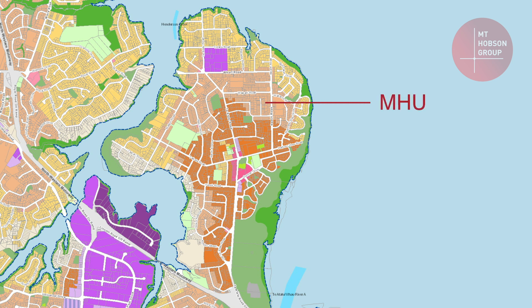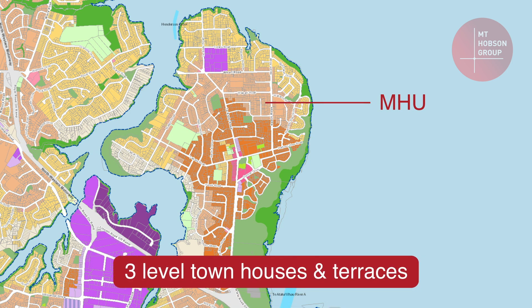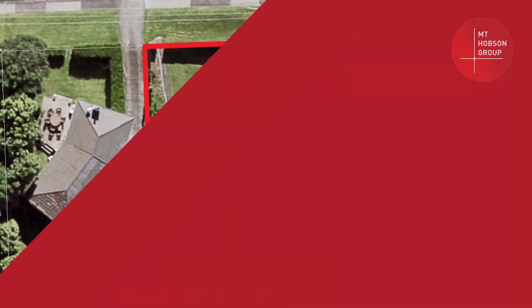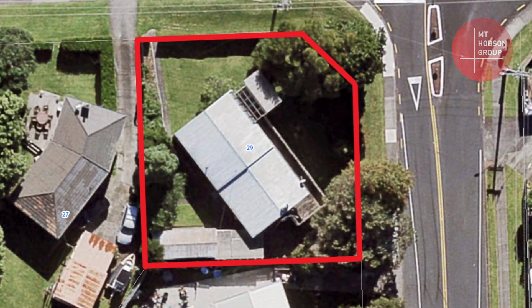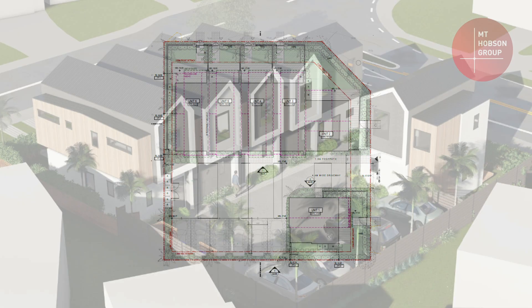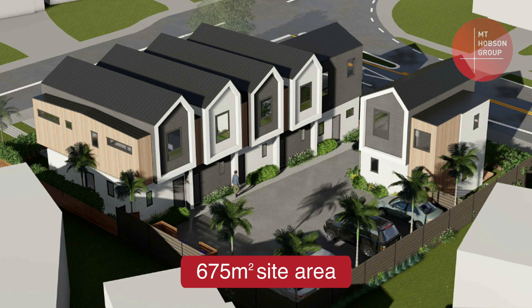The second zone is the Mixed Housing Urban zone, coloured brown on the Unitary Plan. It provides for three-level town and terrace houses and is often located on main roads, providing a higher opportunity for more density on transport roads. An example is 29 Wharf Road, Tiatou Peninsula, where Mount Hobson Group applied for resource consent to construct six units on the site. 29 Wharf Road comes under the Mixed Housing Urban zone with a site area of 675 square metres.